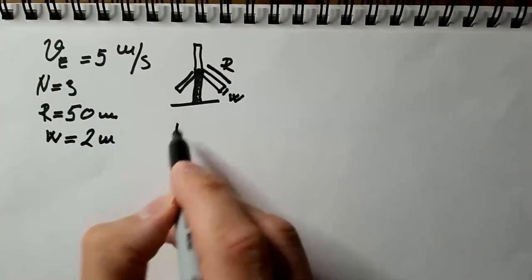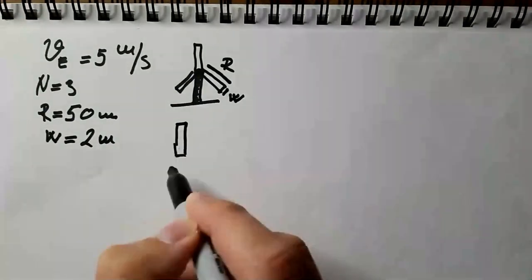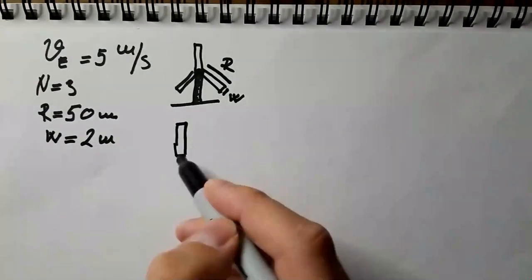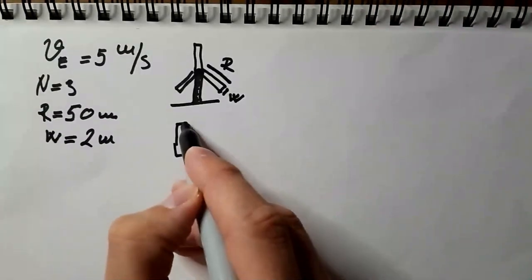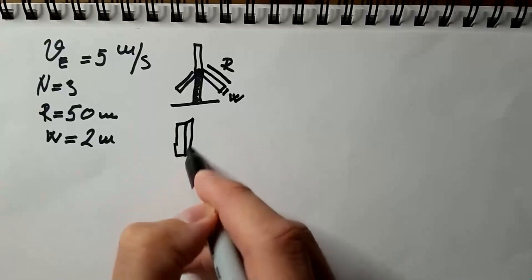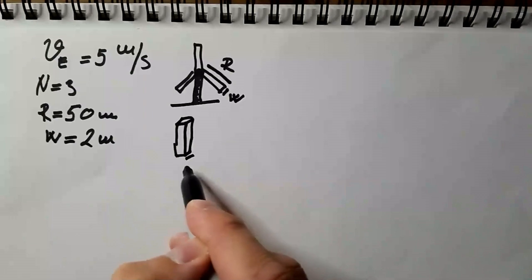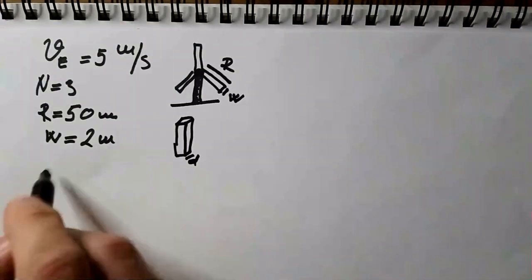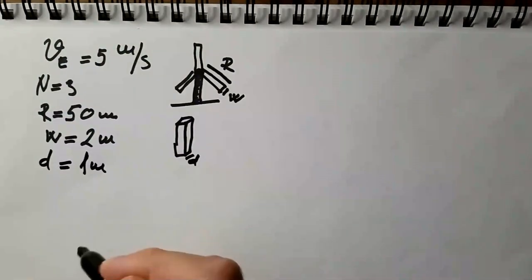And lastly, this blade is three-dimensional object. We will assume for the purpose of this video that it's a rectangular blade. Of course, in a real case scenario it's an airfoil, but here we will just assume it's a rectangular blade. So, this depth of the blade, we will call little d, and let's say it's one meter.